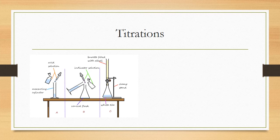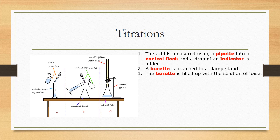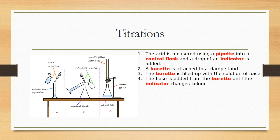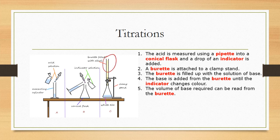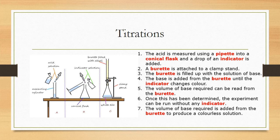In a titration, the acid is measured using a pipette into a conical flask and a drop of indicator is added. A burette filled with the base solution is attached to a clamp stand. The base is added from the burette until the indicator changes colour, and the volume of base required is read from the burette. Once this volume is determined, the experiment is repeated without the indicator so that the resulting crystals are free from indicator. The solution is then heated to evaporate the water and produce the desired salt crystals.